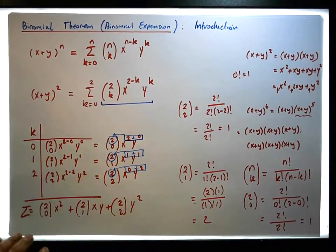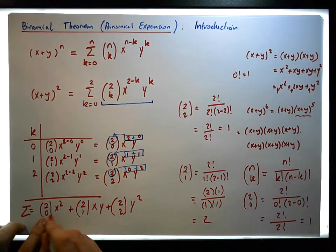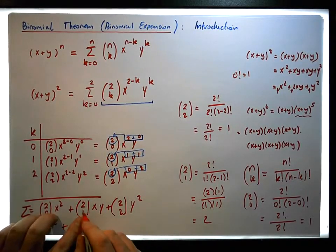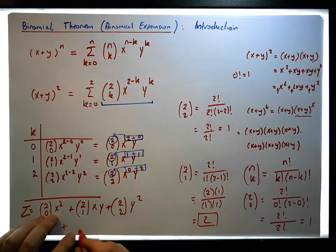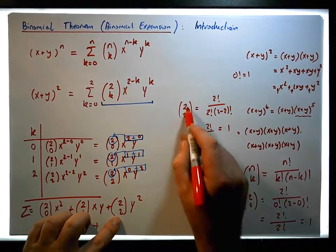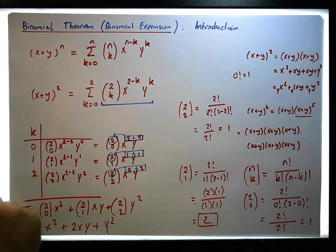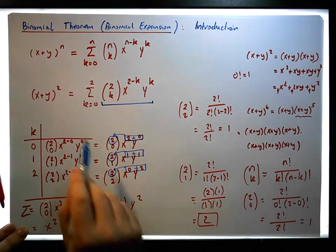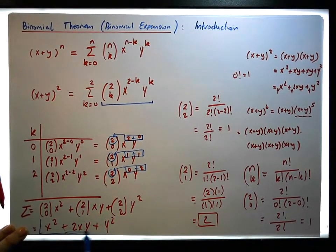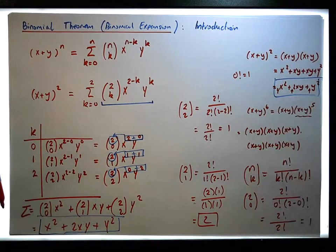The point is that each one of these binomial coefficients: 2C0 is one, so this becomes one times x squared, giving x squared; plus 2C1 is two, so this becomes two xy; plus 2C2 is one, so this becomes y squared. And look — that's actually the same as what we ended up with by actually doing the expansion directly.